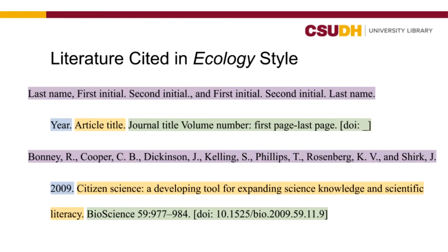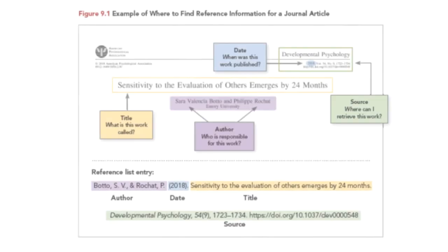Then, include a complete citation in a bibliography list called literature cited at the end of your paper. Your in-text and literature cited citations should match. Use a hanging indent and organize your bibliography alphabetically by an author's last name. This helps your readers skim through the list to find the full citation from the in-text citation.